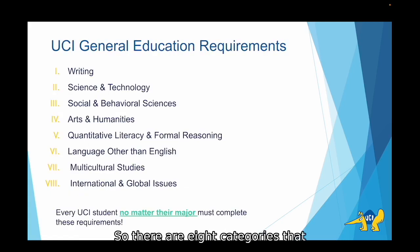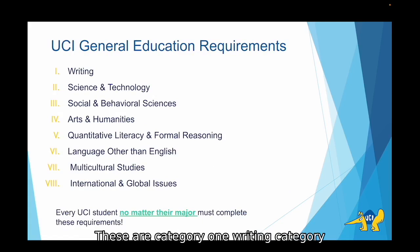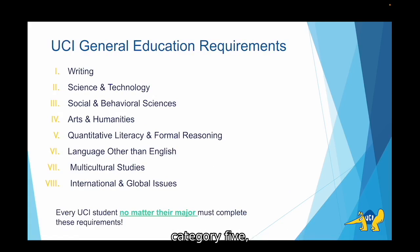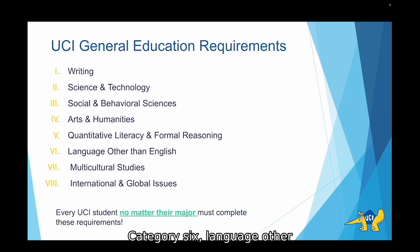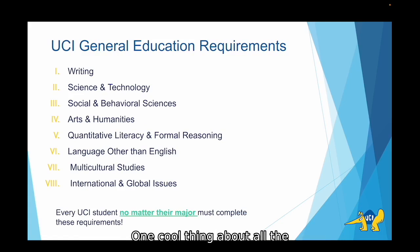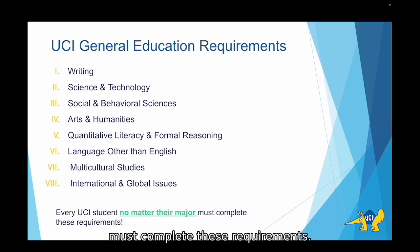There are eight categories that make up UCI's GE requirements. These are Category 1 Writing, Category 2 Science and Technology, Category 3 Social and Behavioral Sciences, Category 4 Arts and Humanities, Category 5 Quantitative Literacy and Formal Reasoning, Category 6 Language Other than English, Category 7 Multicultural Studies, and Category 8 International and Global Issues. One cool thing about all the GEs is that every UC student, regardless of their major, must complete these requirements.